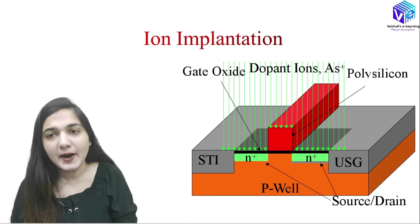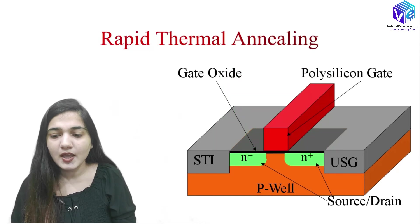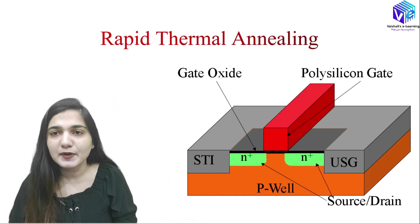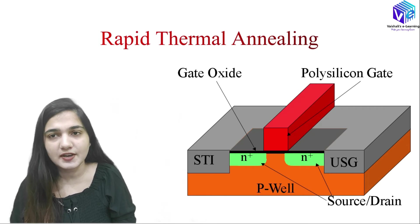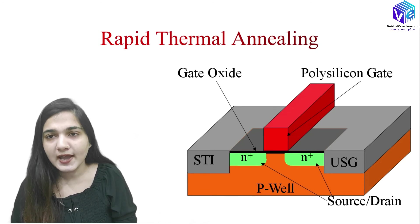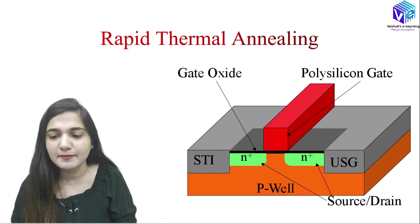This is how we get a particular doped region and make transistors and MOSFETs. After ion implantation, the surface is damaged because high-speed ions have been hitting it. To repair this damage, we use the annealing process, which restores the surface. The annealing process will be discussed in more detail when we cover ion implantation.